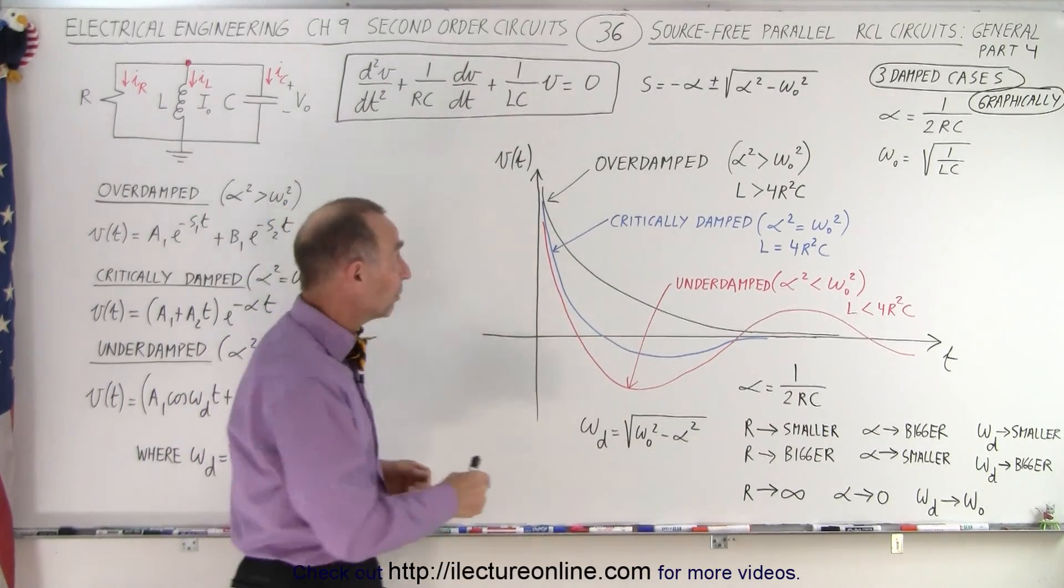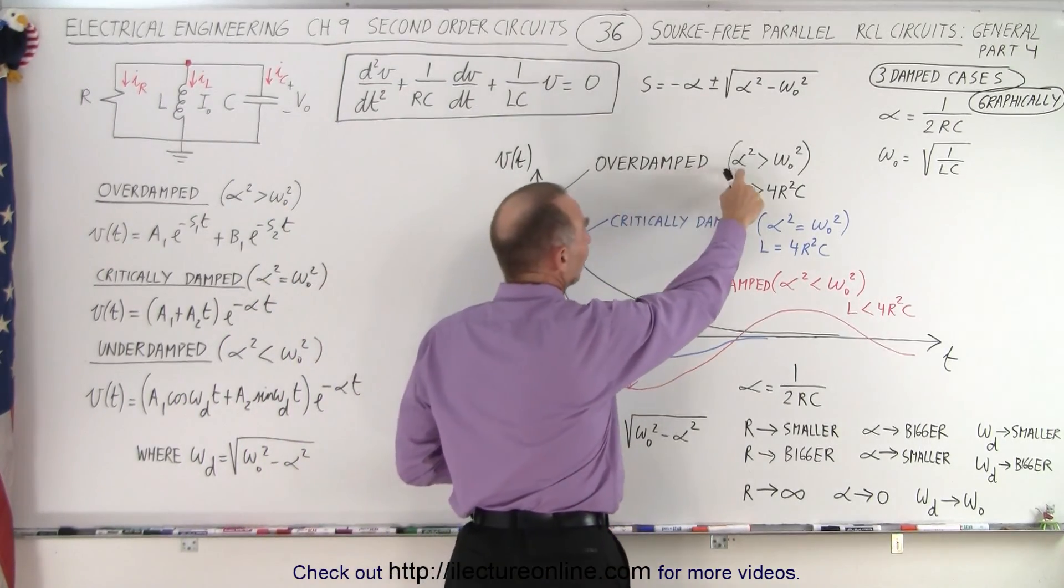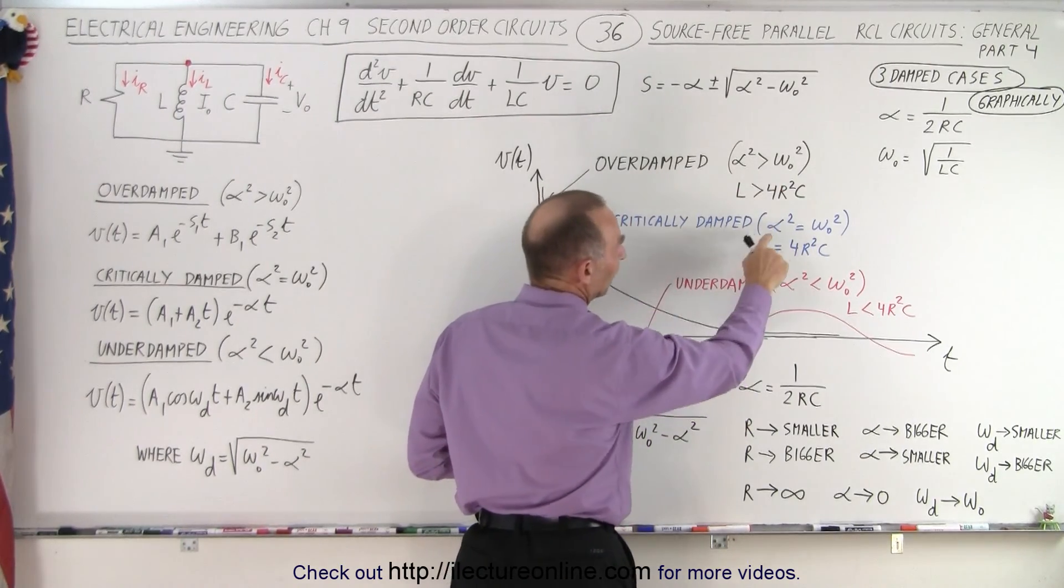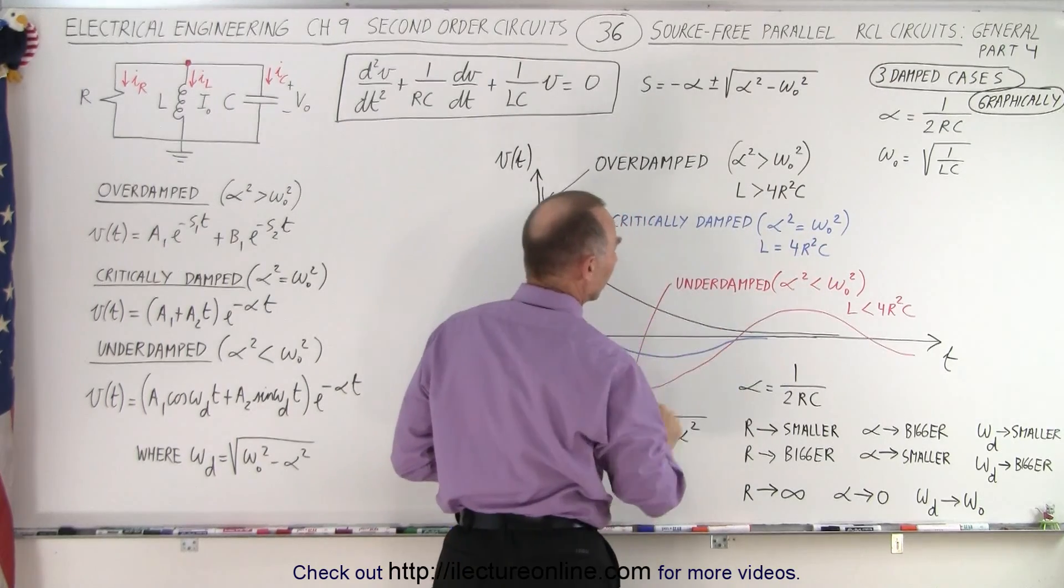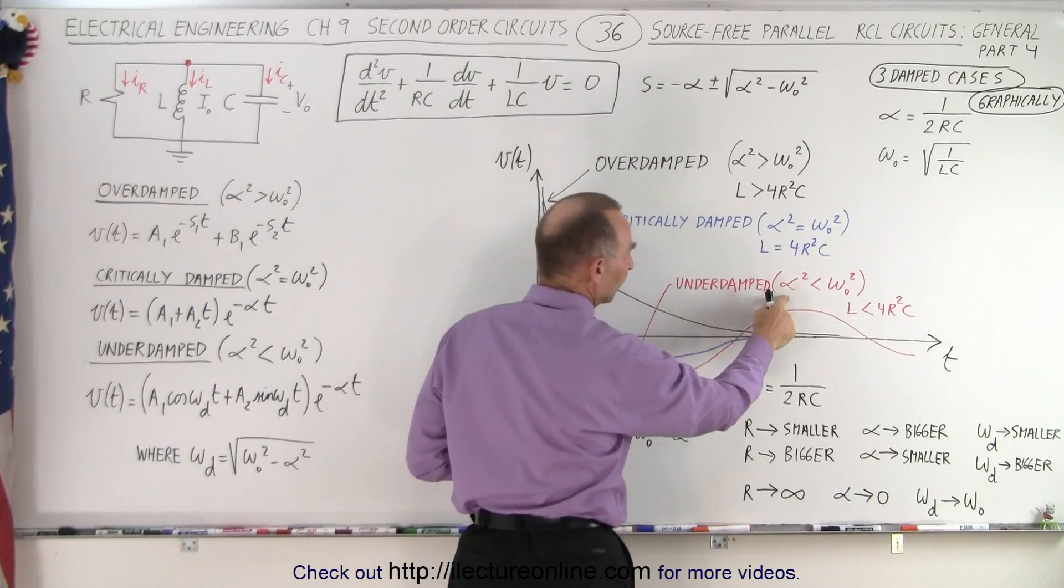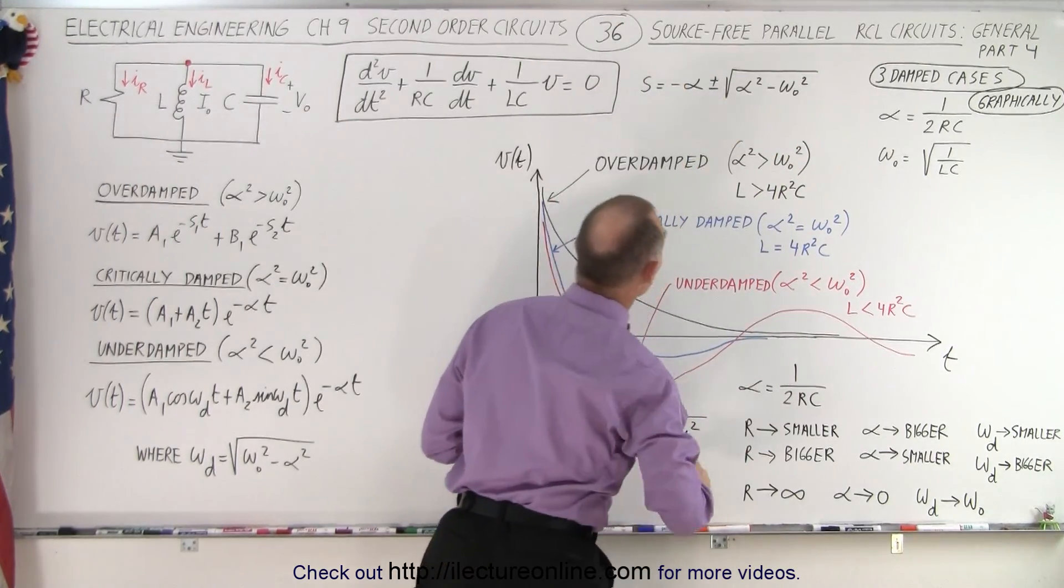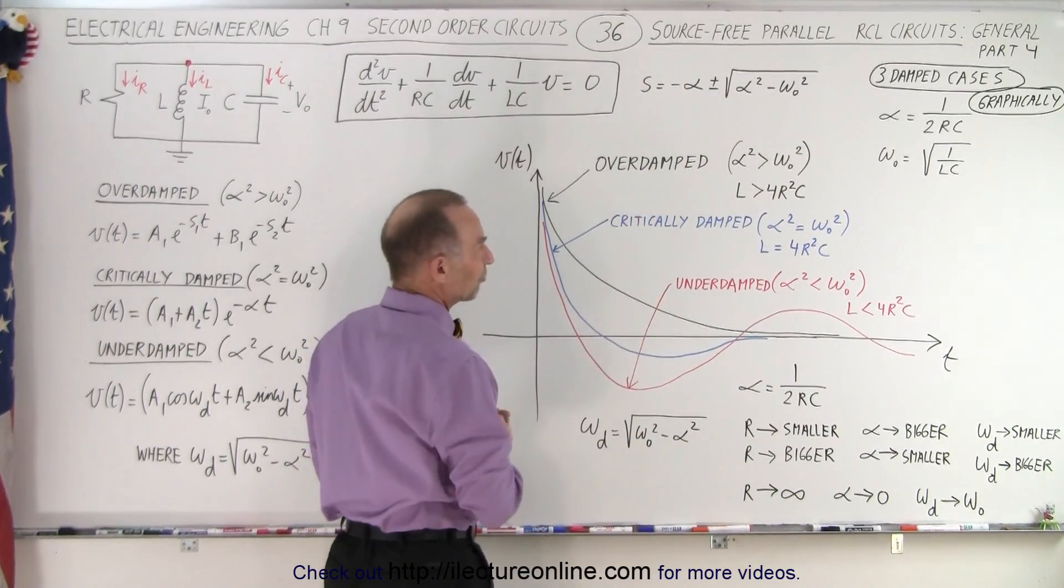Now we already know that in the case of overdamping, alpha squared is larger than omega sub-naught squared. In the case of critical damping, we have alpha squared equals omega squared, and underdamping we have alpha squared less than omega squared. Of course, we go to the solution of the differential equation - that's where I came from.